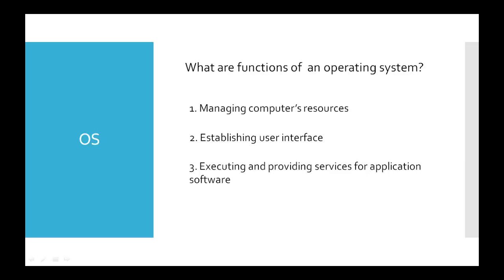An operating system has three main functions. The first function is to manage the computer's resources, such as the central processing unit, memory, disk drives, and printers.